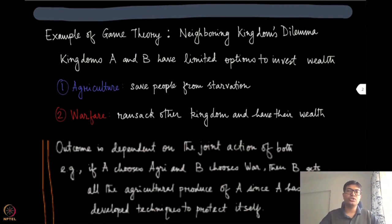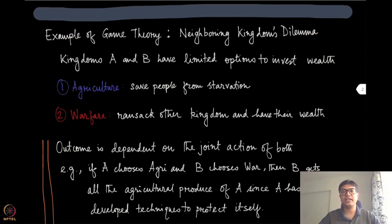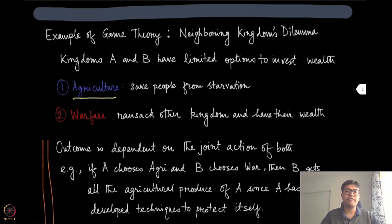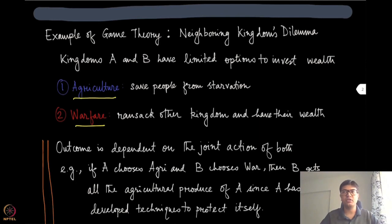This game is called the Neighboring Kingdoms Dilemma. If you search for it, you can search with 'Prisoner's Dilemma' — I have just renamed it slightly to make it more interesting in this context. Suppose we go back a little in history, to the times when kingdoms used to rule. There are two kingdoms A and B, and they have very limited options or resources to invest.